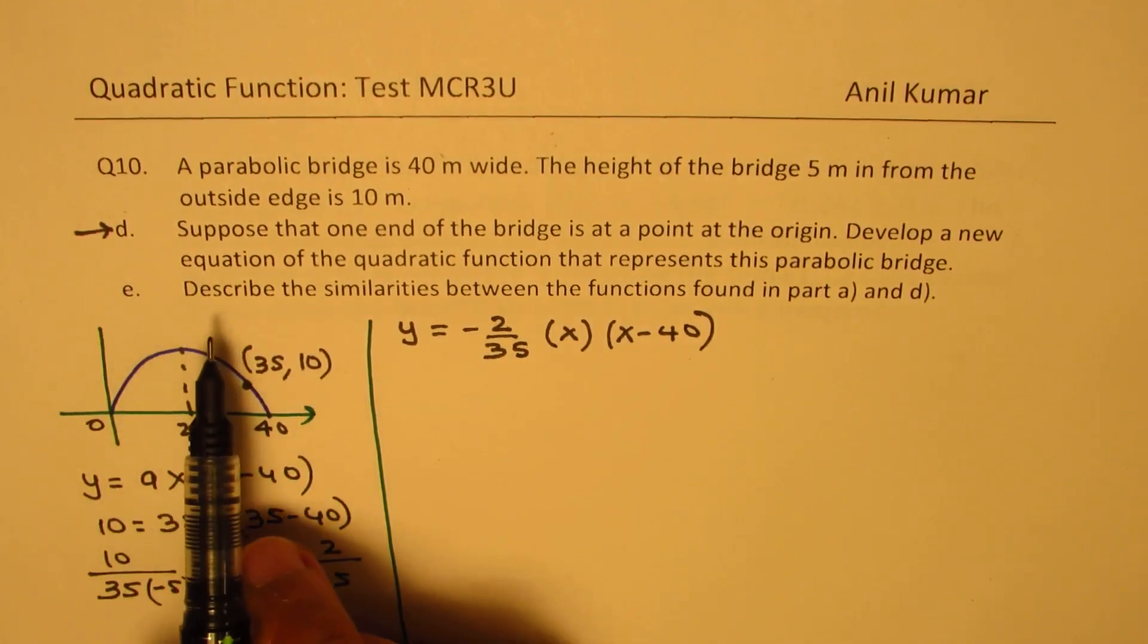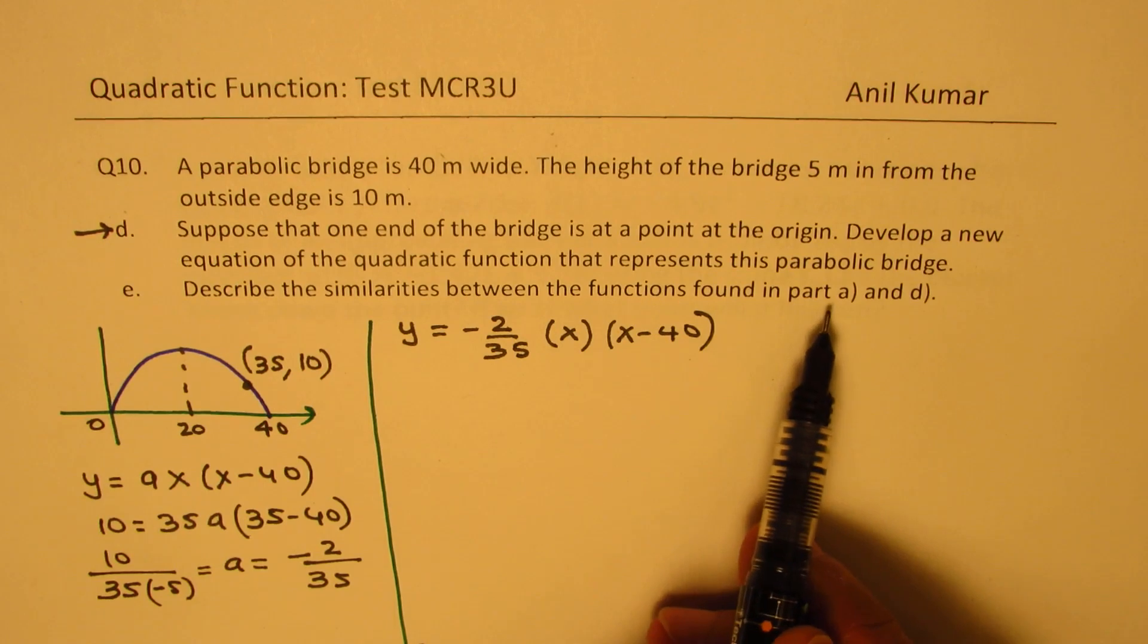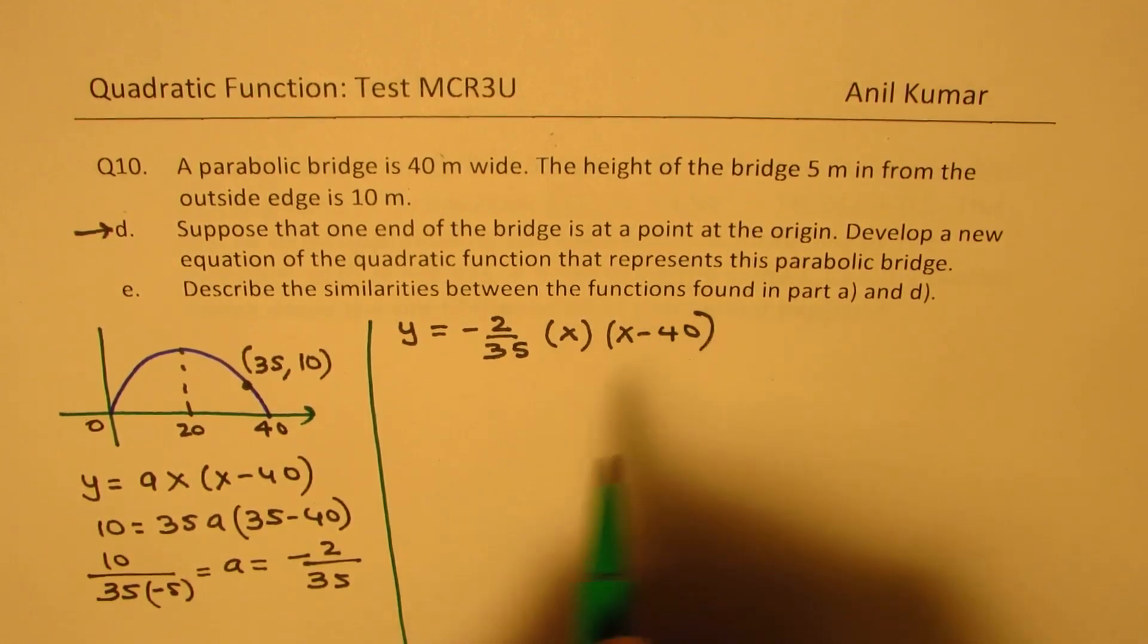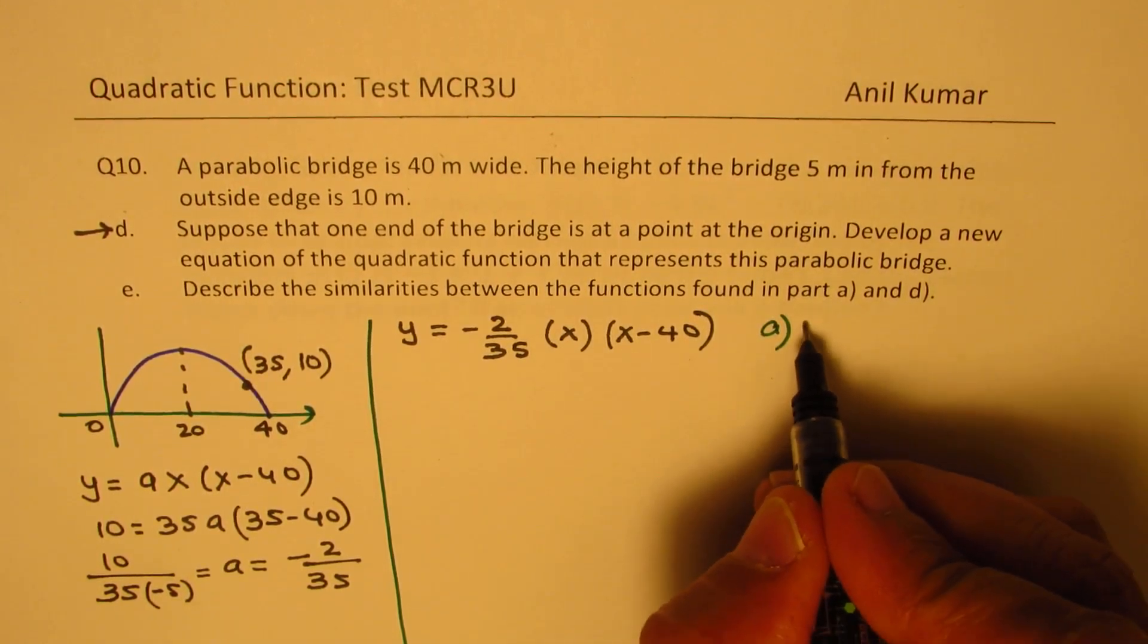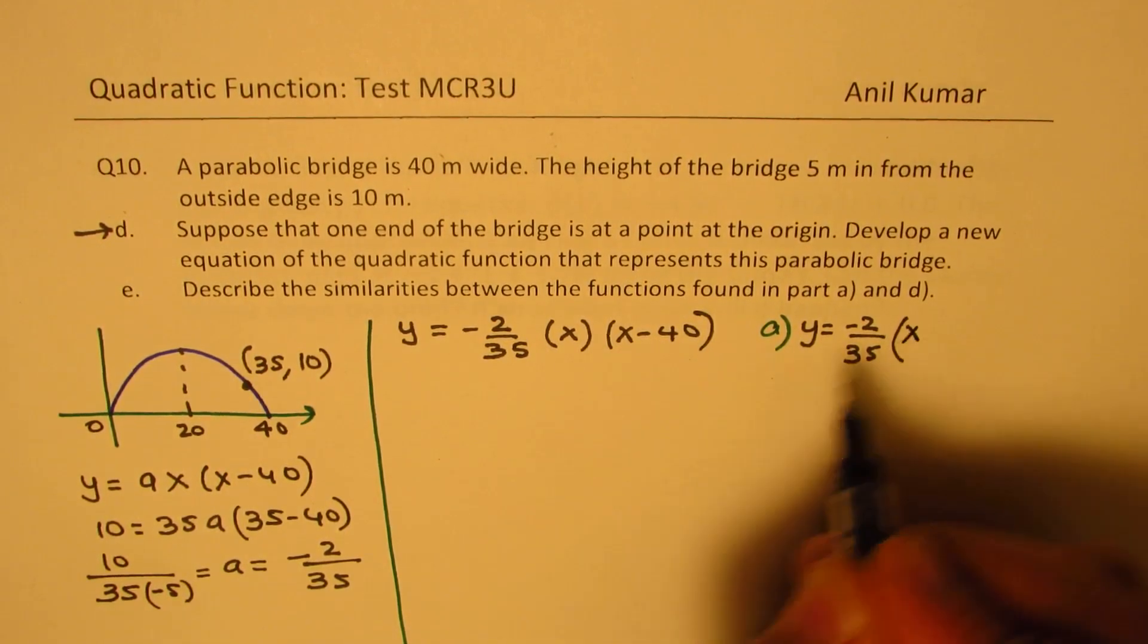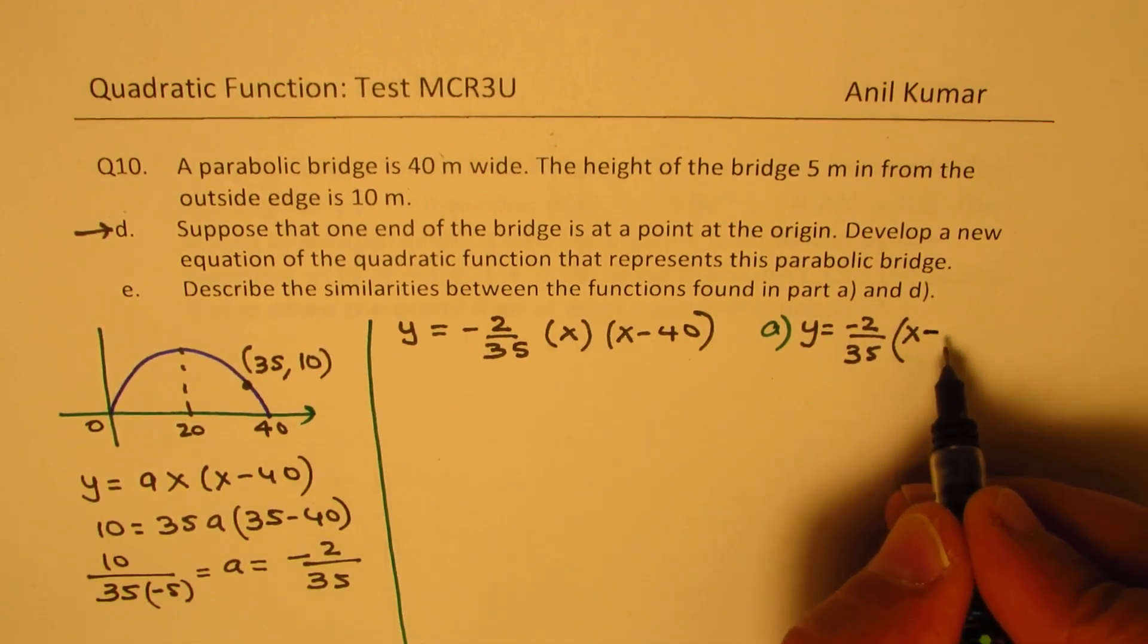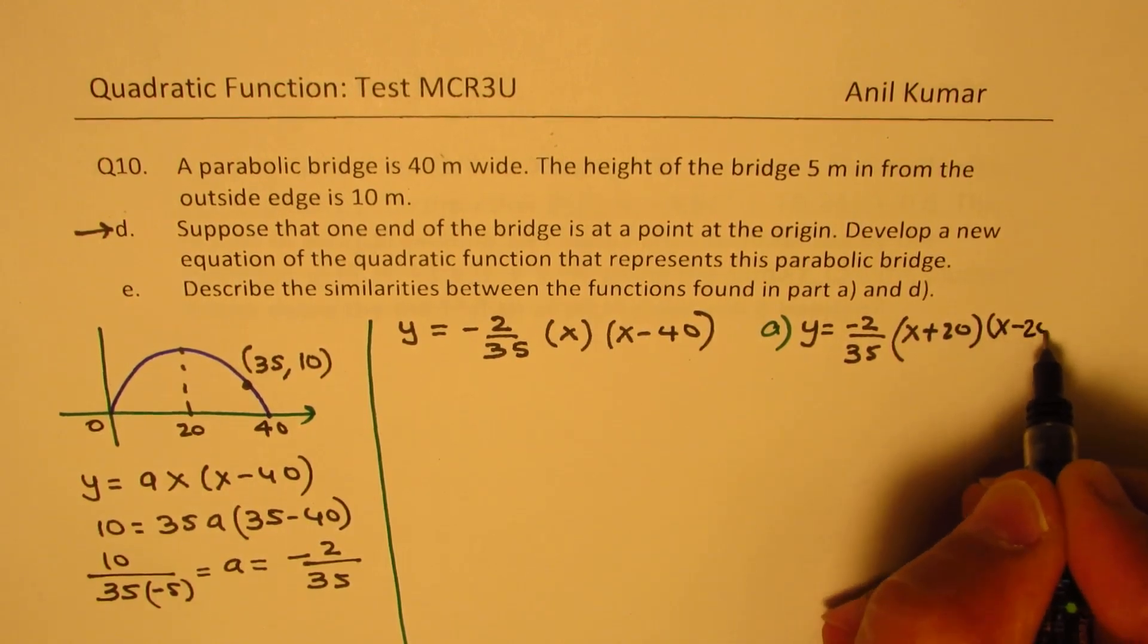Part E is, describe similarities between the functions found in part A and in part D. Now, that's very interesting. In part A, the equation which we got was what? Basically, A value was same, minus 2 over 35. But the factor here was not x times x minus 40, but it was x plus 20 times x minus 20, right?